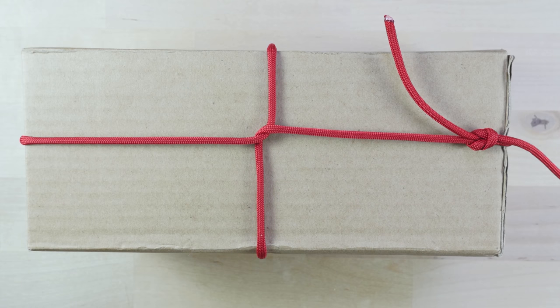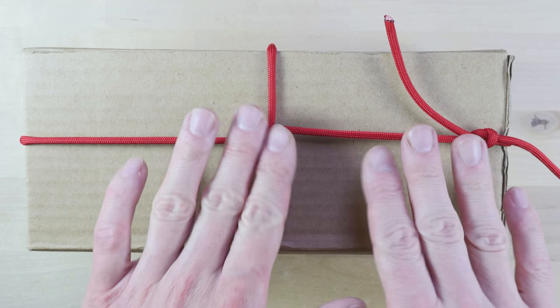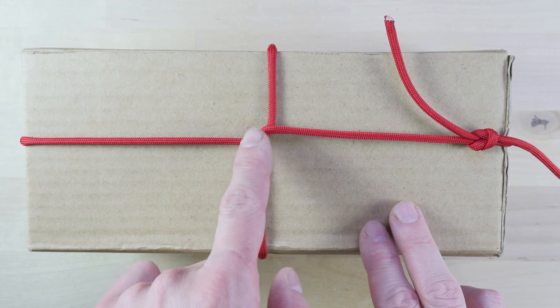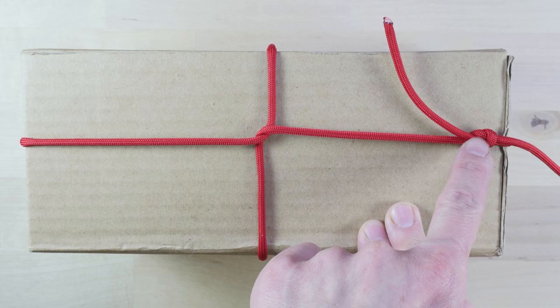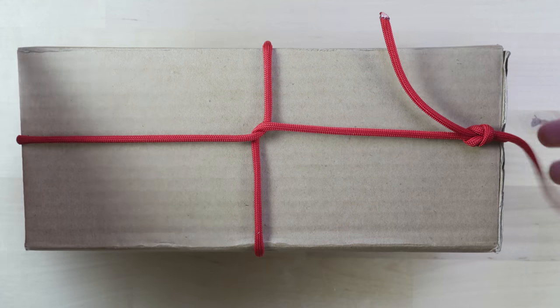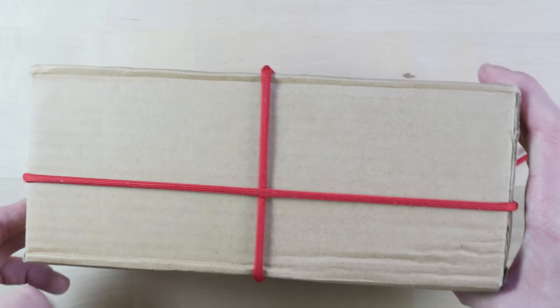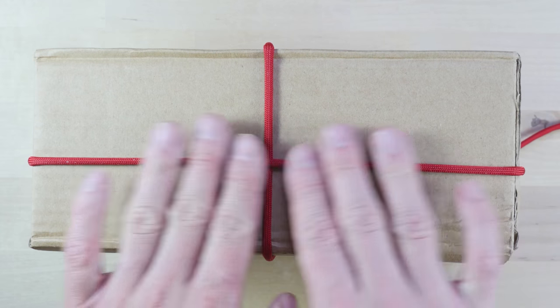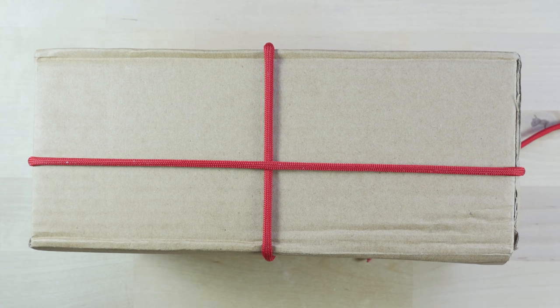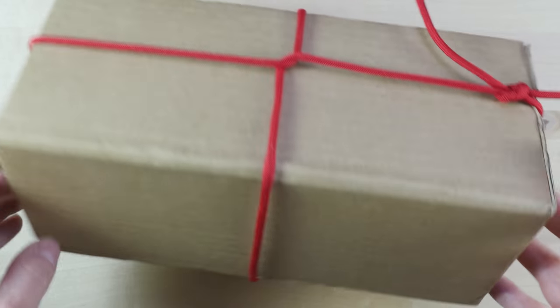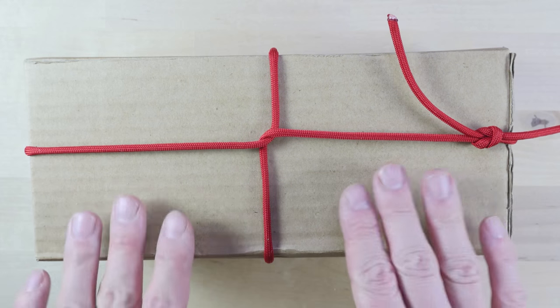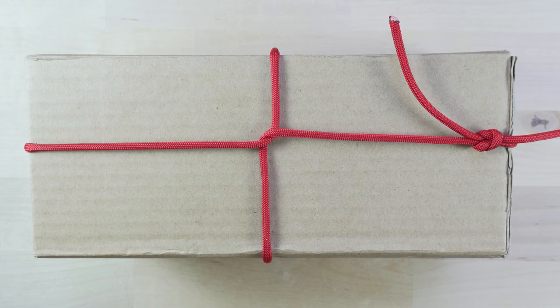So first off, let's take a look at the lashing that we're going to do. At the top you can see a nice little crossing here, we have a reef knot here on one of the sides, and the bottom is also tied together like this. Now, let's move on to actually tying this lashing.